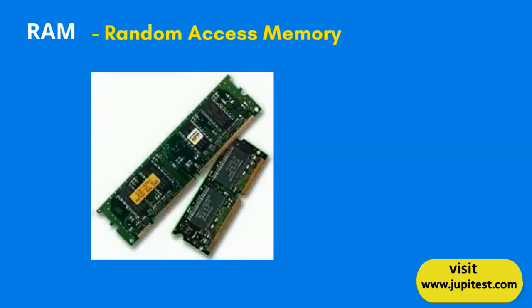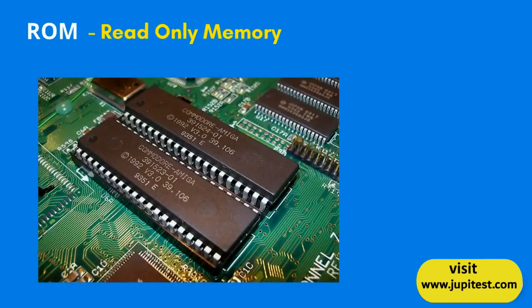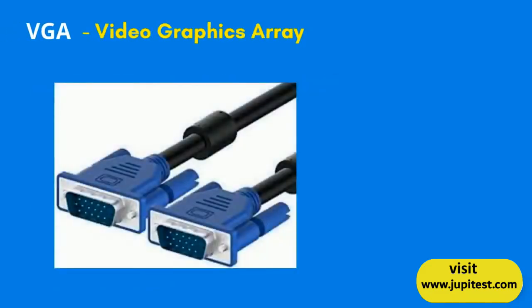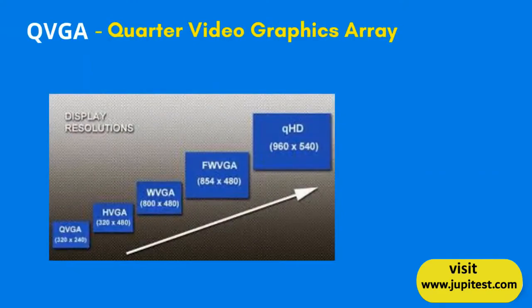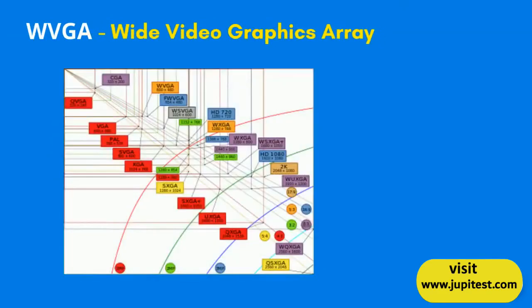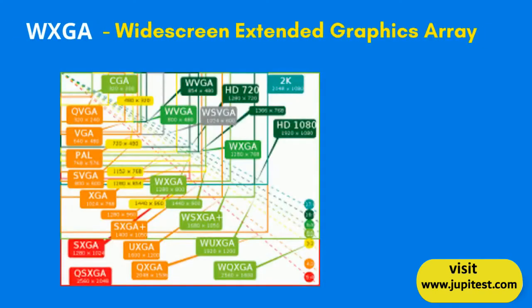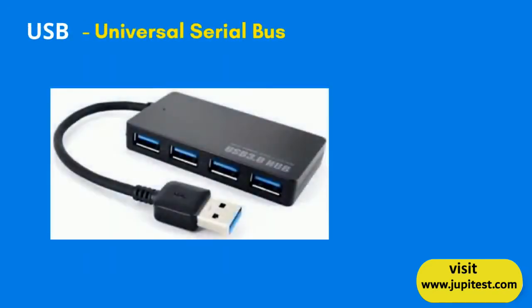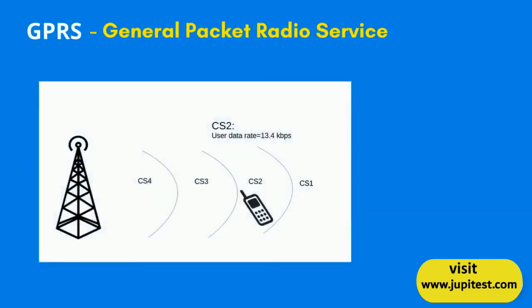RAM: Random Access Memory. ROM: Read Only Memory. VGA: Video Graphics Array. QVGA: Quarter Video Graphics Array. WVGA: Wide Video Graphics Array. WXGA: Widescreen Extended Graphics Array. USB: Universal Serial Bus. OS: Operating System. GPRS: General Packet Radio Service.